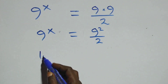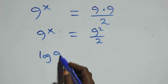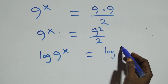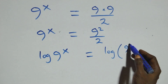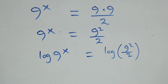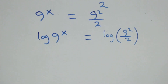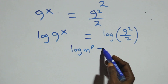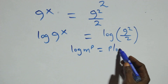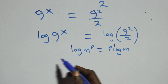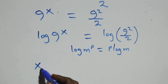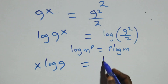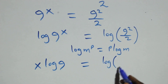We take the log on both sides. So log of 9 raised to power x equals log of 9 squared over 2. We apply the power rule of logarithms — log of m raised to power p equals p times log m — so this becomes x log 9 equals log(9 squared over 2).